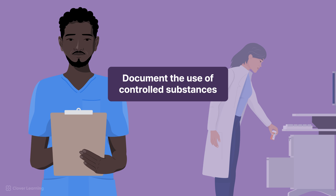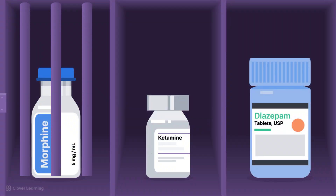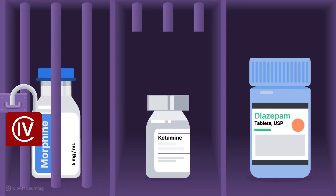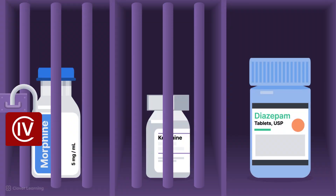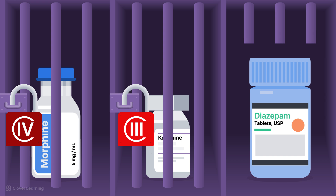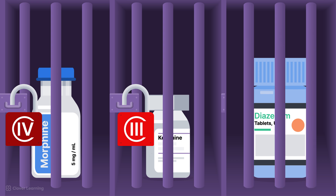There must be very careful documentation of the use of controlled substances within the facility. Be sure to understand and adhere to your facility's policies about controlled substances. Although regulations aim to curb abuse, they can also create barriers for patients genuinely in need of these medications, such as those with chronic pain or terminal illnesses.